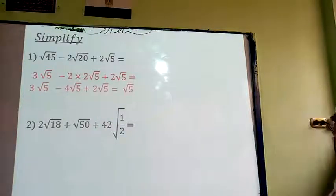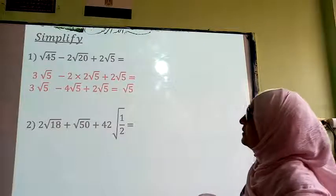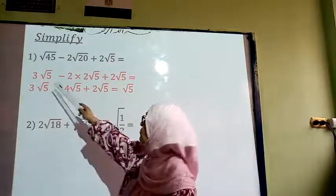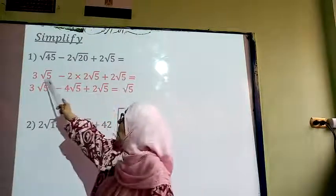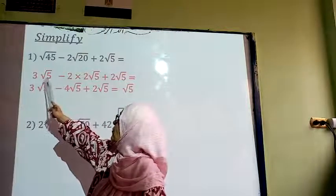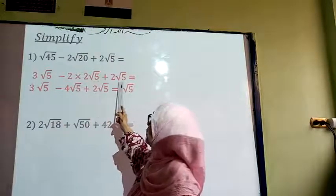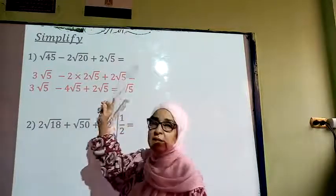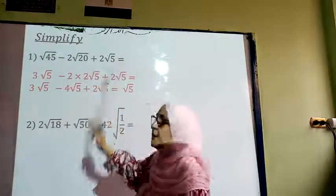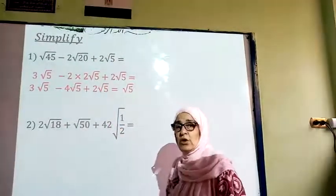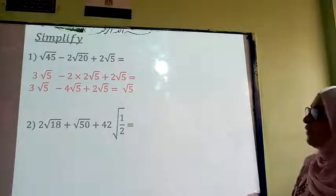So I am going to add all these terms together because all of them are like terms: root 5, root 5, and root 5 — as if we have x, x, and x. So I end up with a coefficient times root 5.